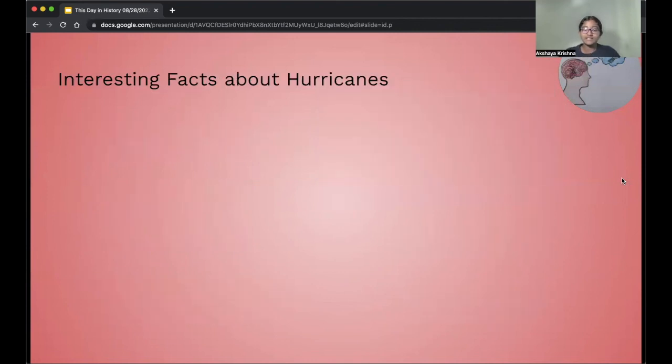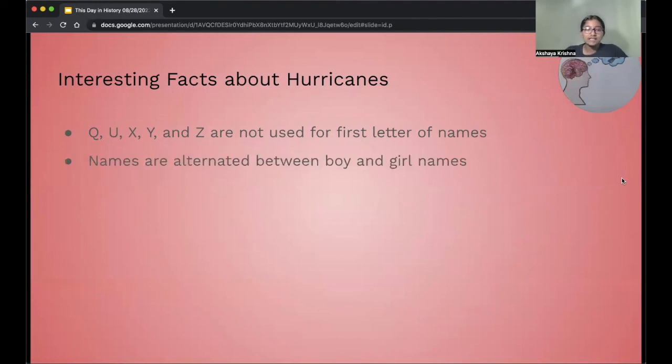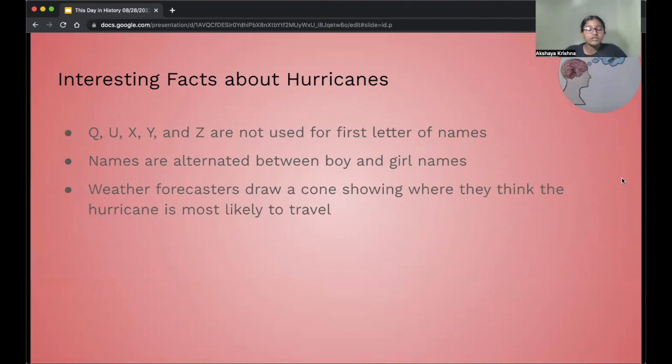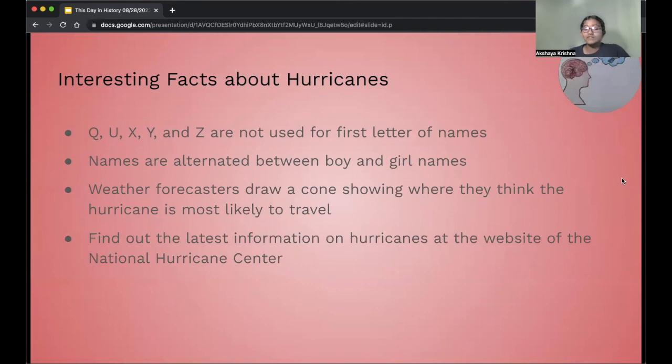Now let's learn about some interesting facts about hurricanes. The letters Q, U, X, Y, and Z are not used for first letter of hurricane names. As you can see, this video was on Hurricane Katrina, which starts with the letter K. When scientists name hurricanes, they choose names that are alternated between boy and girl names. So the hurricane named before and after Hurricane Katrina were boy names. To show where weather forecasters think hurricane is most likely to travel, they draw cones on maps. And finally, to find out the latest information on hurricanes, you can look up the website of National Hurricane Center to get to know more information.